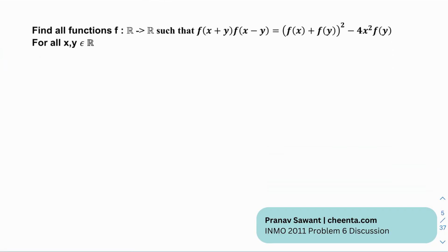We want to find all functions f mapping from the reals to the reals such that f(x+y) · f(x−y) = (f(x) + f(y))² − 4x² · f(y). So what can we do? Let's start with some basic substitutions — it's always a good technique to start functional equations that way.